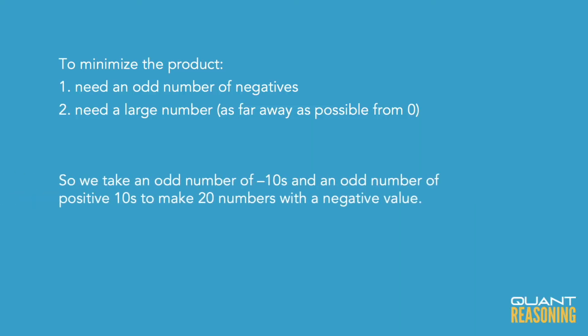So if we're multiplying 10 times 10, twenty times, that would be 10 to the power of 20. But don't forget the negative sign in front of it because we wanted to minimize the product. And that's the answer.